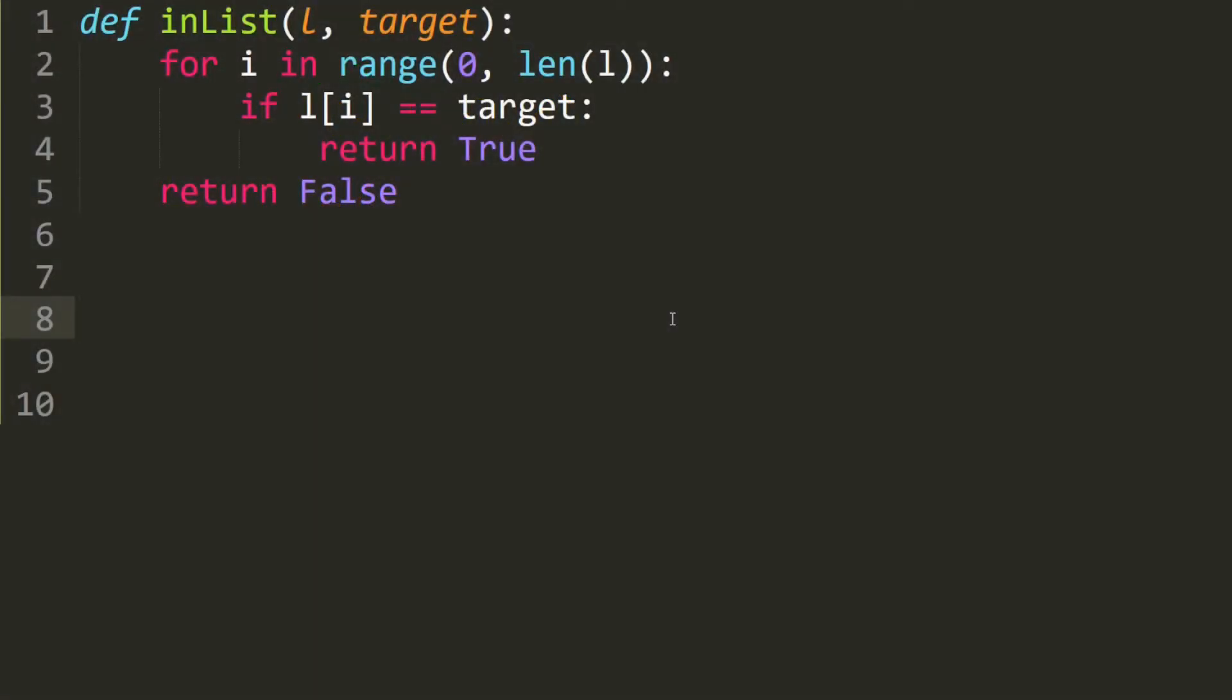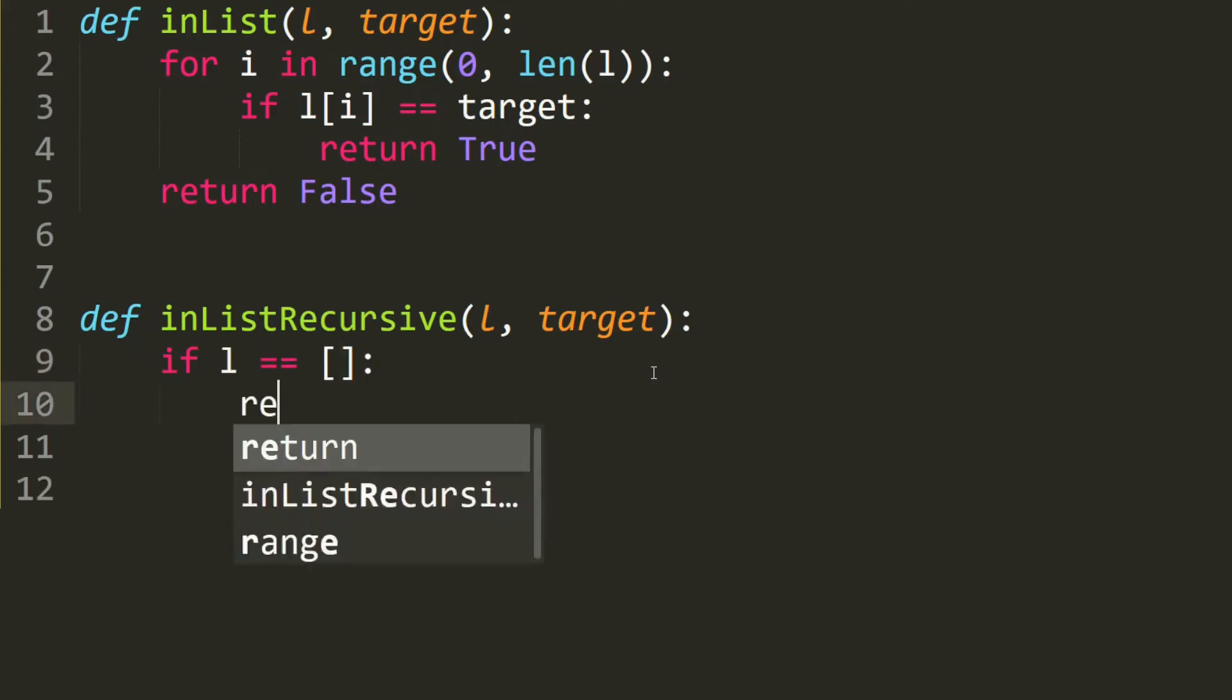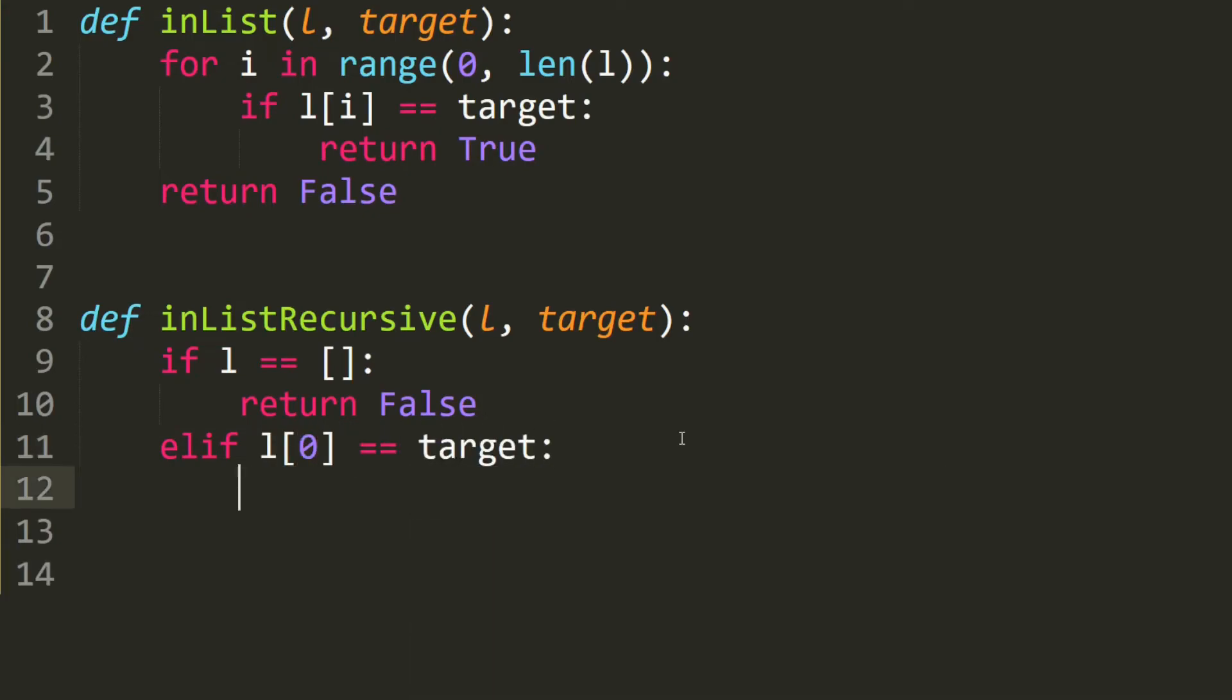Let's code the recursive solution. We define inListRecursive, which takes in a list and a target. If this list is empty, then all we have to do is return false. And if the first element of the list is equal to the target, then we return true. Otherwise, we simply move on to the next element.